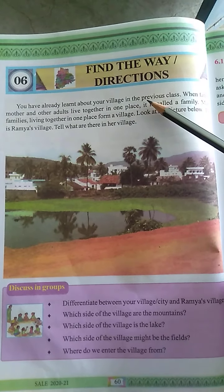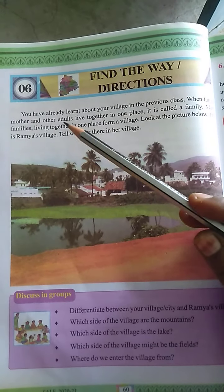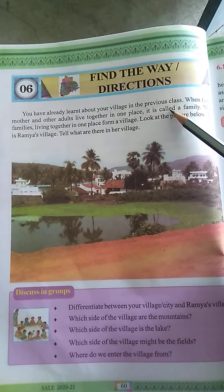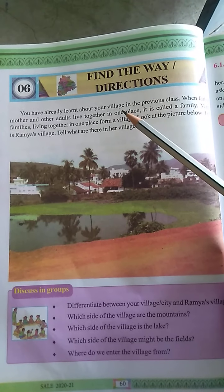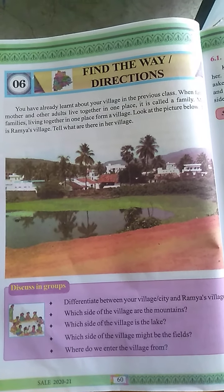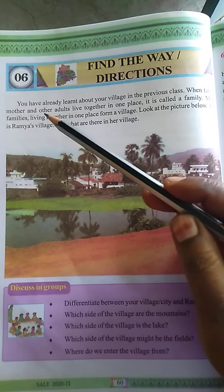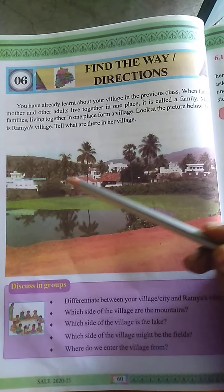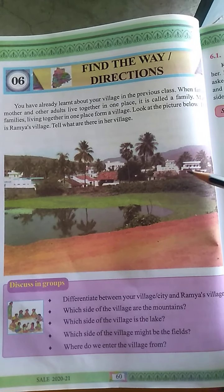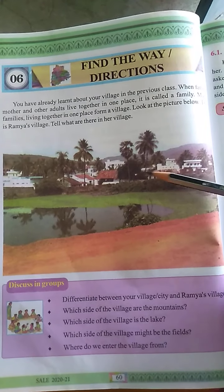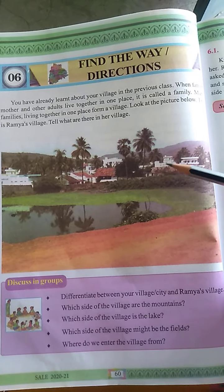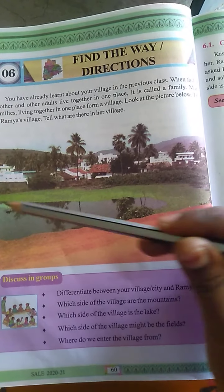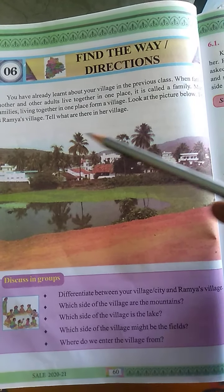Already we have learned about the village in a previous class. When father, mother and other adults - adults means our grandparents - live together in one place, it is called a family. Many families living together in one place form a village. These are the many houses we can see here - attached houses, buildings, kaccha houses. In all these houses, only one family is living? No. There are different families. When these all different families live in one place, this forms a village.